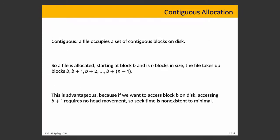The first storage strategy is contiguous allocation. A file occupies a set of blocks and the blocks are all adjacent on disk — there are no gaps between blocks belonging to the same file. A file is allocated starting at block B and is N blocks in size, so it takes up blocks B, B+1, B+2, and so on up to B+N−1.